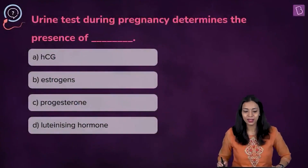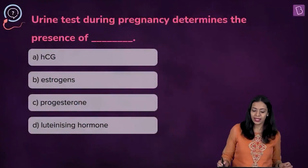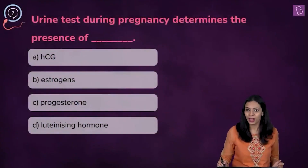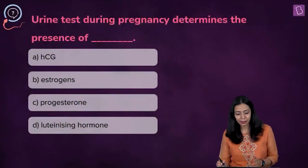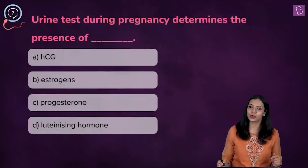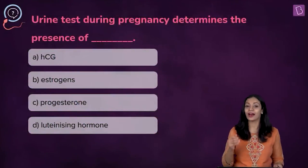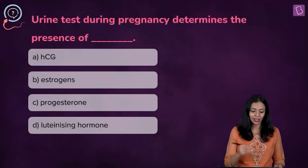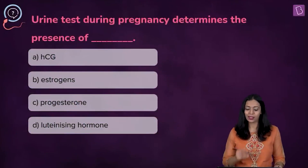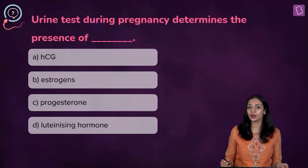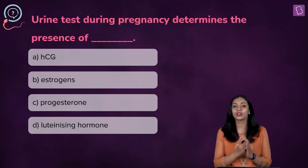Here's the next question: urine test during pregnancy determines the presence of what? In the options we have HCG, estrogens, progesterone, and luteinizing hormone.